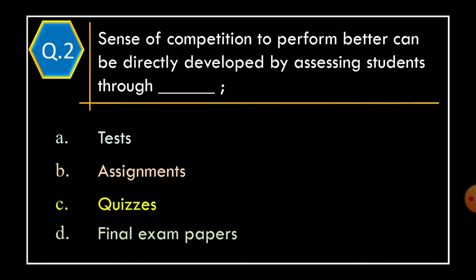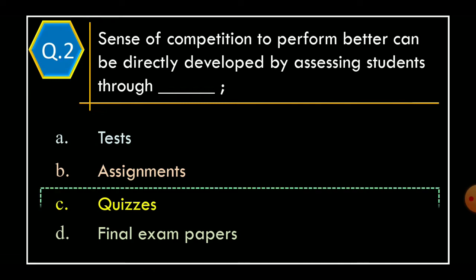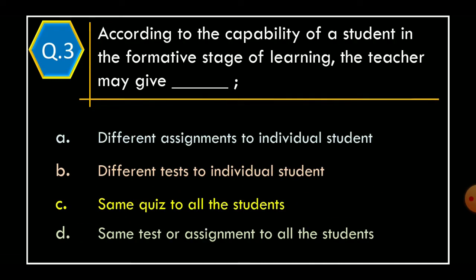Question 2: Sense of competition to perform better can be directly developed by assessing students through — Option A: tests; Option B: assignments; Option C: quizzes; Option D: final exam papers. The correct option is Option C: quizzes.